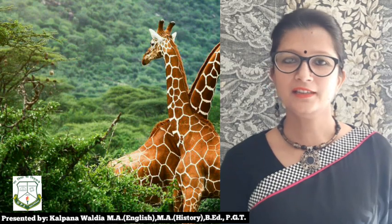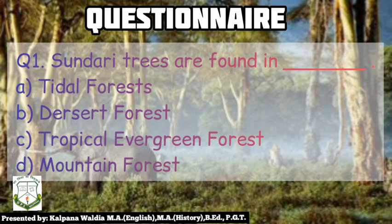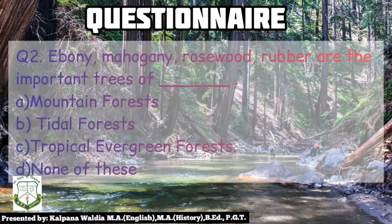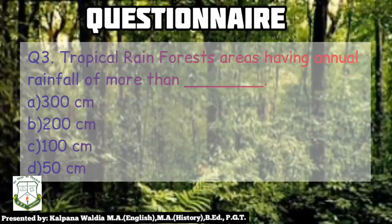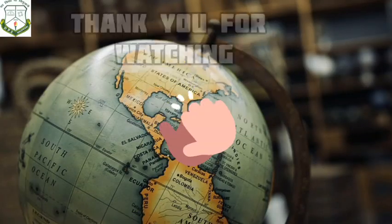Till then, stay happy and stay safe. Now let us do some questions. Sundari trees are found in — tidal forest, desert forest, tropical evergreen forest, or mountain forest? Next: ebony, mahogany, rosewood, and rubber are important trees of — mountain forest, tidal forest, tropical evergreen forest, or none of these? Last question: tropical rainforests have annual rainfall of more than — 300 cm, 200 cm, 100 cm, or 50 cm? Answer all these questions in the comments. Thank you for watching.